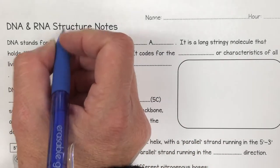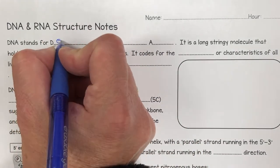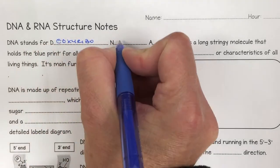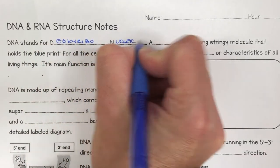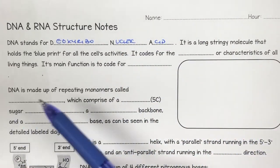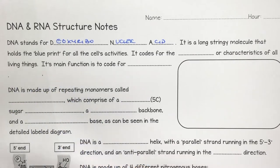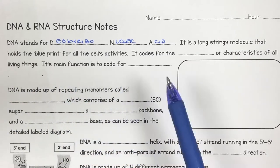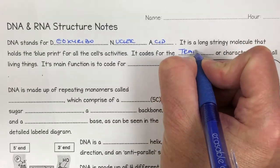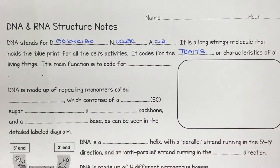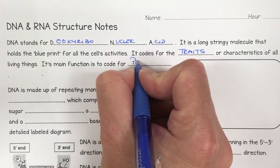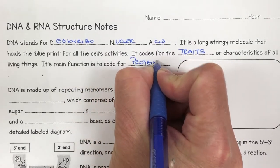So what does DNA stand for? It stands for deoxyribonucleic acid. DNA is a very long stringy molecule that holds a blueprint, or basically all the information for the cell's activities. It basically codes the traits — things that we can do, or characteristics, as in how we look — and its main function really is to code for proteins.